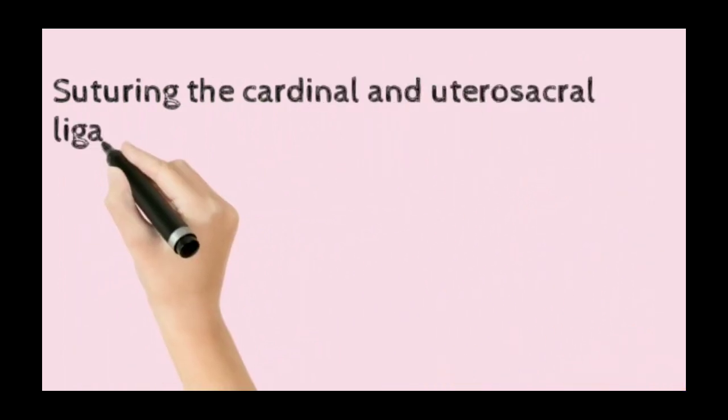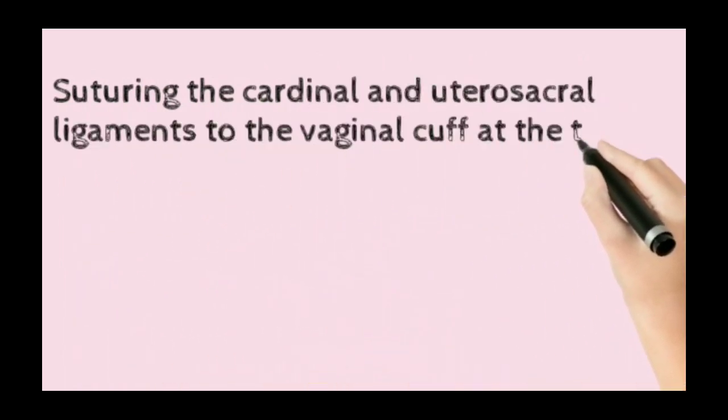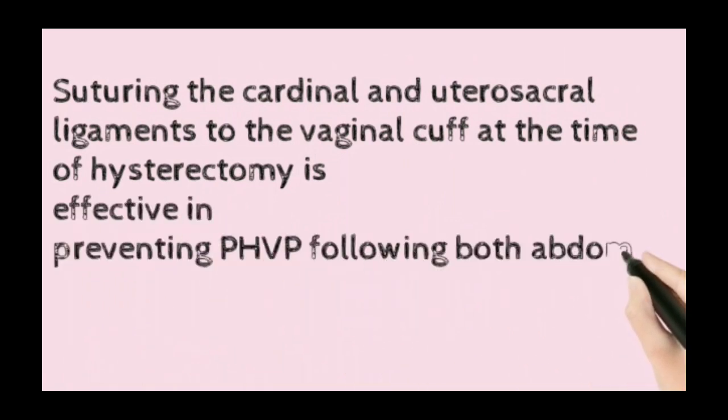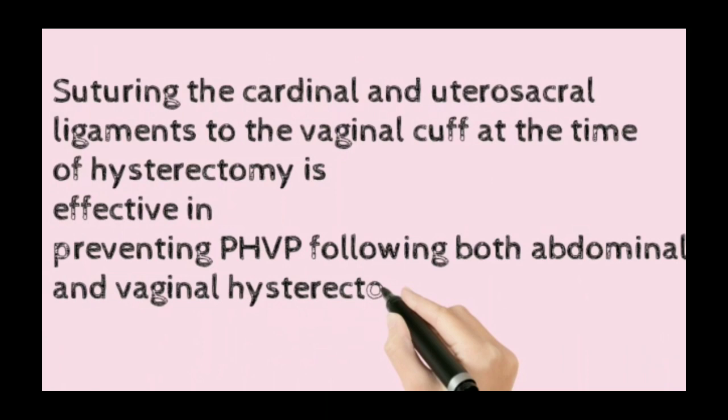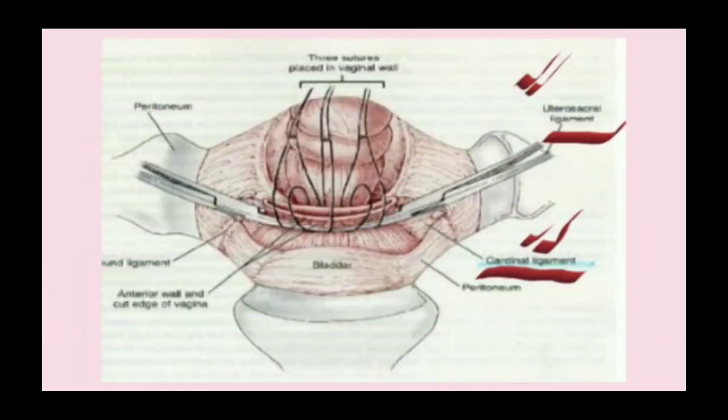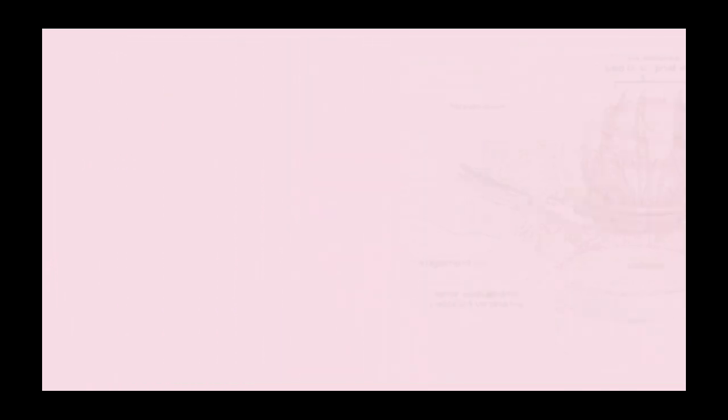Secondly, suturing the cardinal and uterosacral ligaments to the vaginal cuff at the time of hysterectomy is effective in preventing post-hysterectomy wall prolapse, both abdominal and vaginal hysterectomy. You can see from this figure.